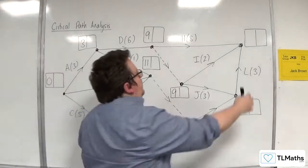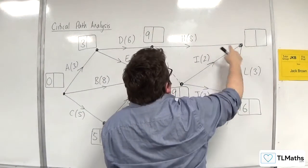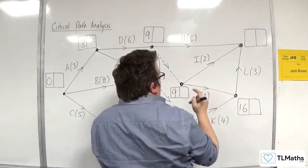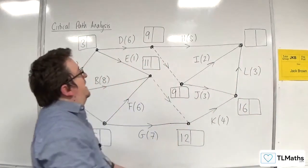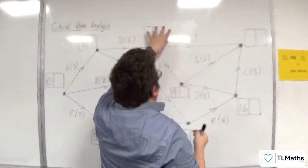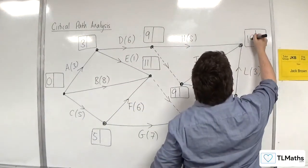Then for this one, we've got 9 plus 8 is 17, or 9 plus 2 is 11, or 16 plus 3 is 19. So we had 17, 11, or 19. So 19 takes it.